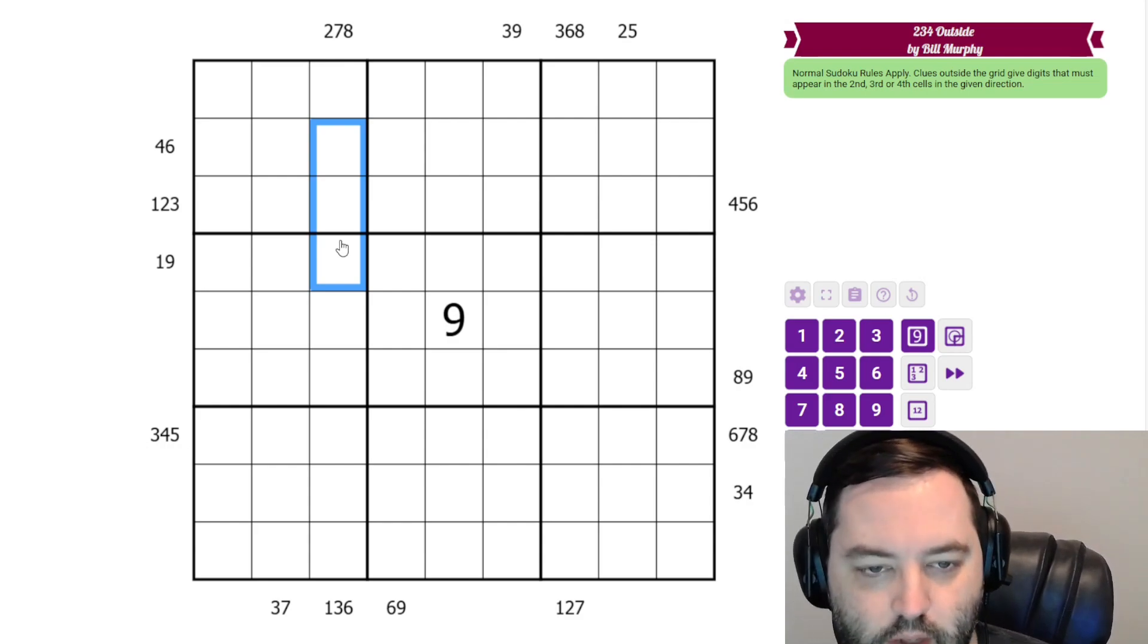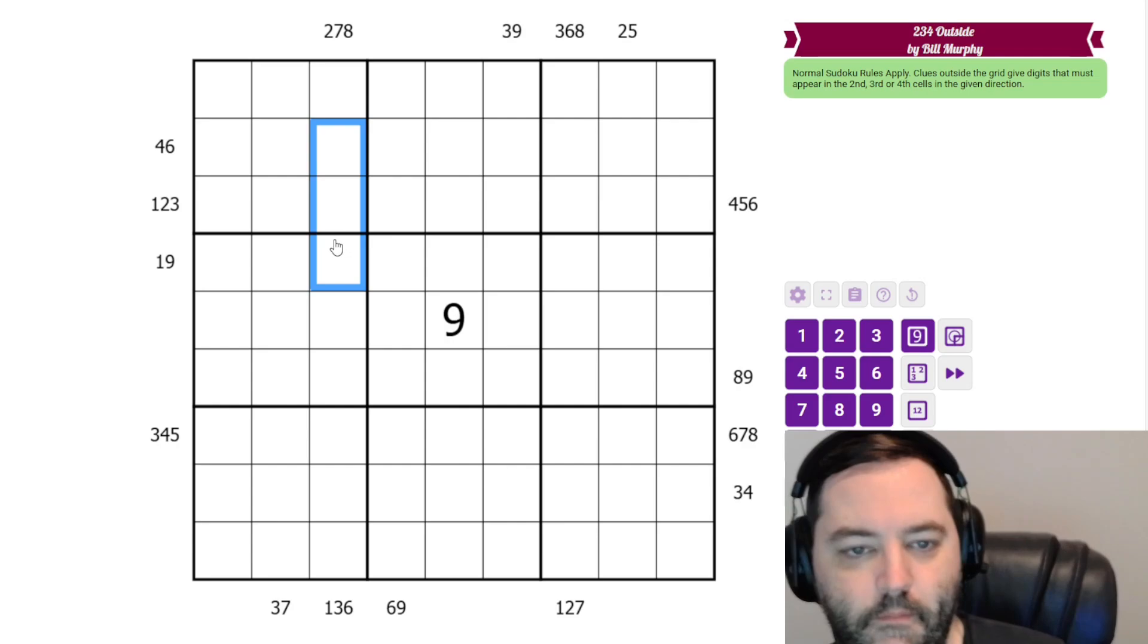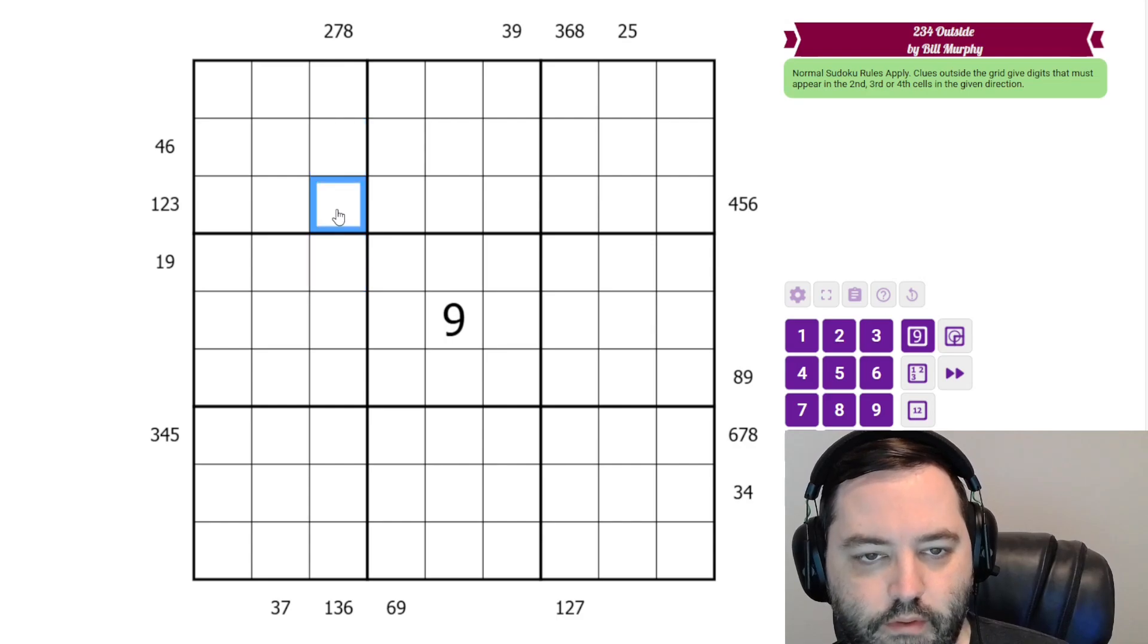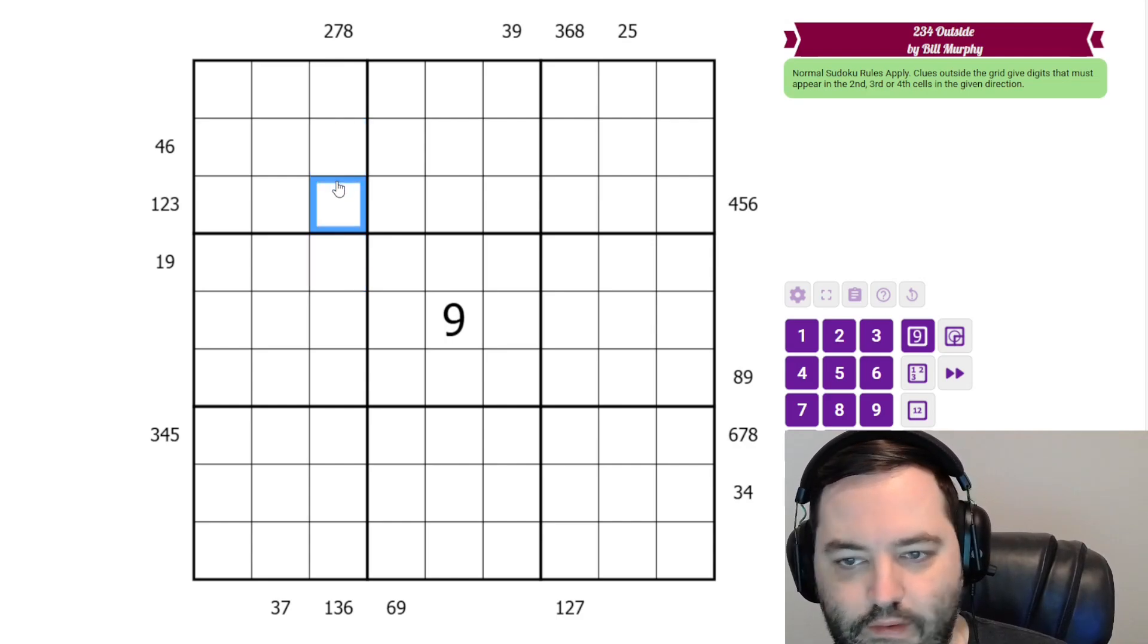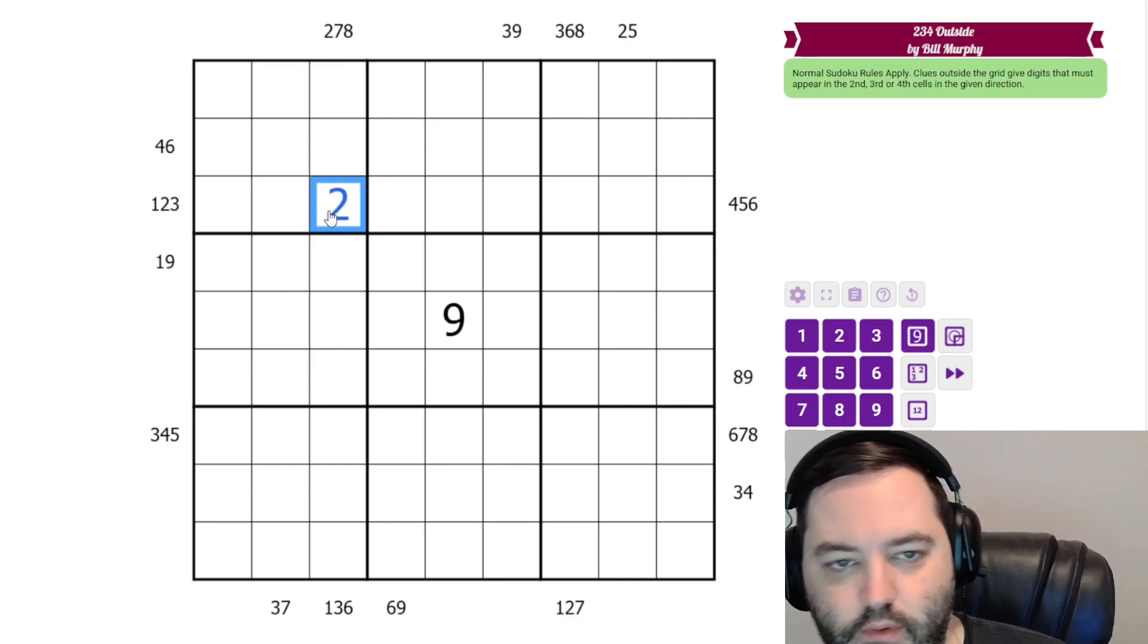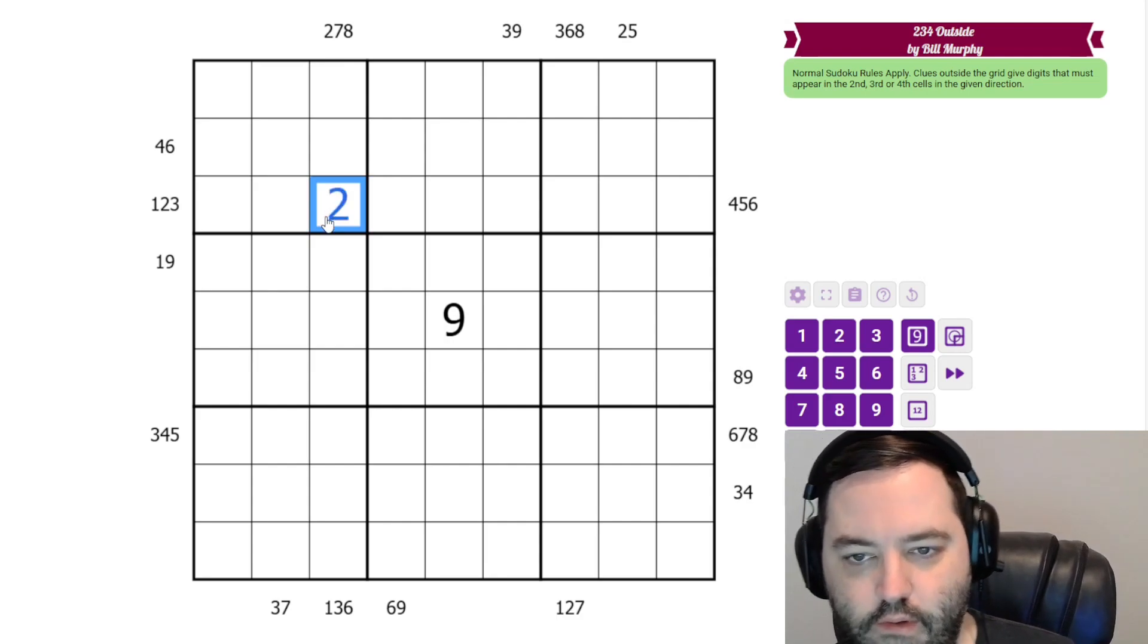It's going to be important as we go through the puzzle. I'm going to try and avoid pencil marking as much as possible because of my hand. So the first thing we're going to look at is the intersection of these clues. So we have a 2-7-8 here, but we also have 1-2-3 here. The only digit that is in both clues is a 2, so it has to go in the intersection.